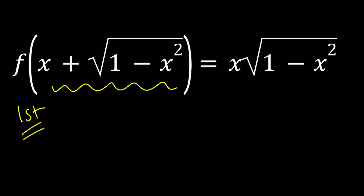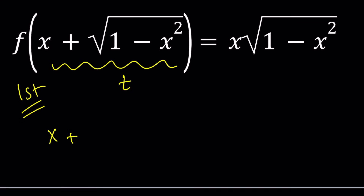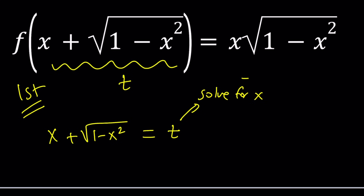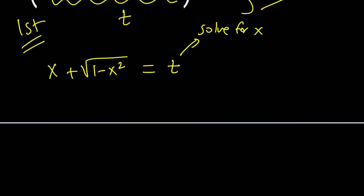I want this whole thing inside the parentheses to be another variable, like t. You can also use u — it doesn't matter, anything is fine as long as you don't use x. Now, if you set x plus the square root of 1 minus x squared equal to t, your goal is to solve for x in terms of t and then substitute that back, so that we can get an expression in terms of t.